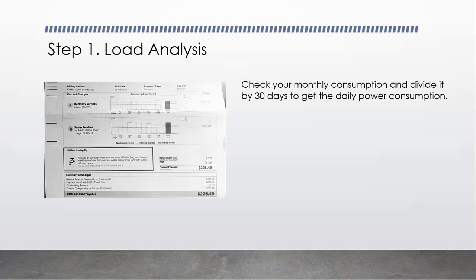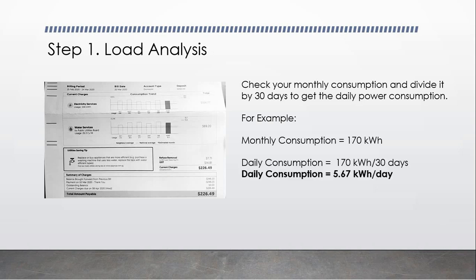For example, if we have a monthly power consumption of 170 kilowatt-hours, we just divide it by 30 days. Our daily consumption is 5.67 kilowatt-hours per day.